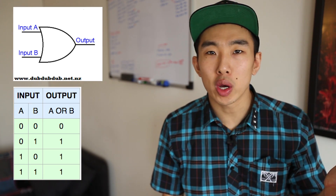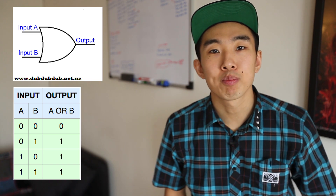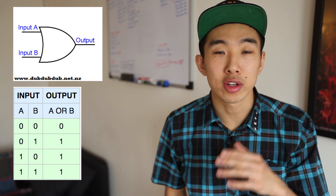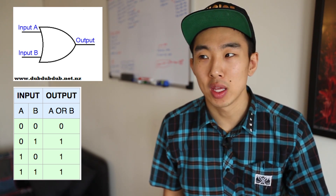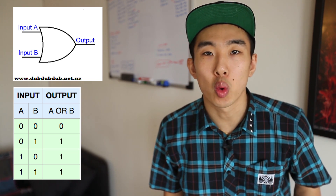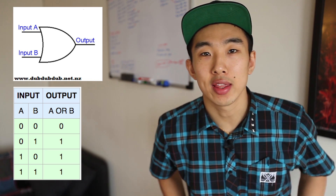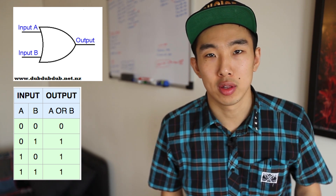Let's quickly go over the OR gate. First scenario: not a boy and not tall — the answer is no. Second scenario: not a boy but tall — the answer is yes, because remember, OR. Third scenario: you're a boy but short — at least you're a boy, so yes. Final scenario: you're a boy and you're tall — obviously yes. Those are all four possible outcomes for OR logic.